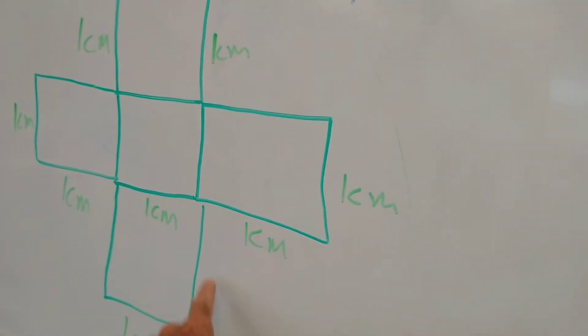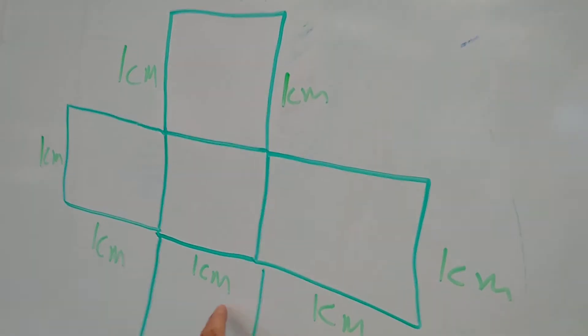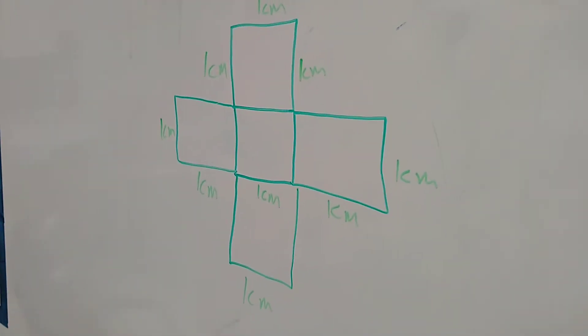We're going to cut around here, around the outside, and we're going to fold on these lines, and it's going to fold up into a little cubic centimeter. We'll do that to show you what a cubic centimeter looks like.